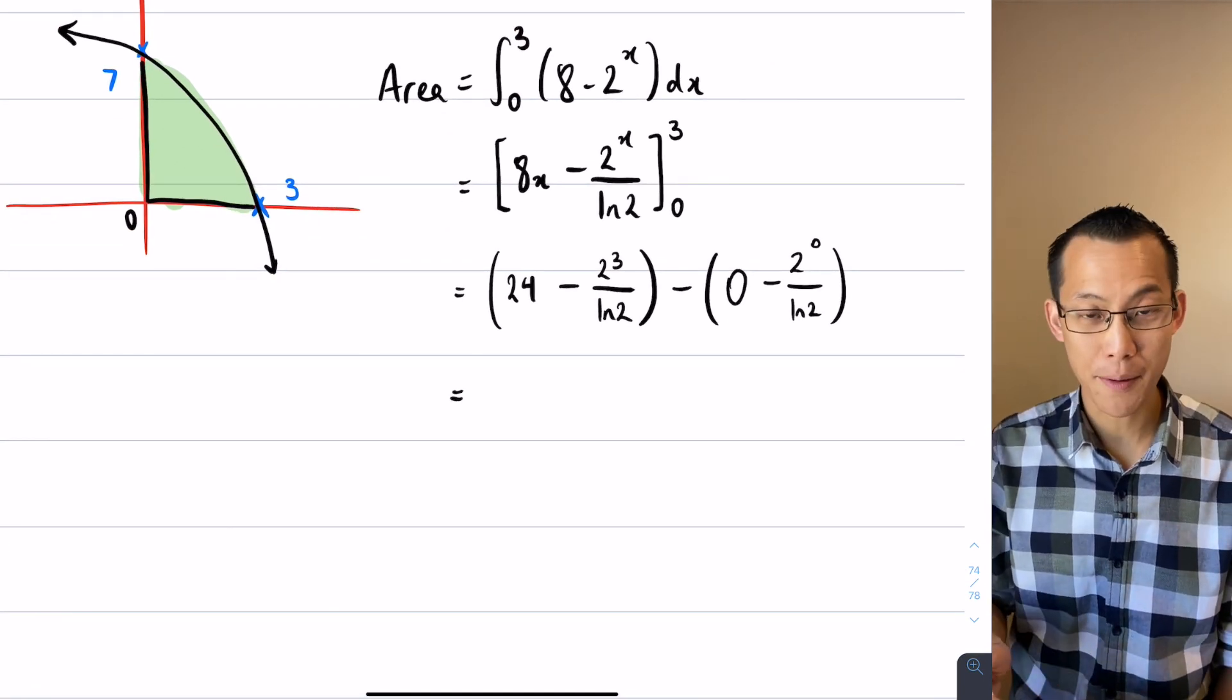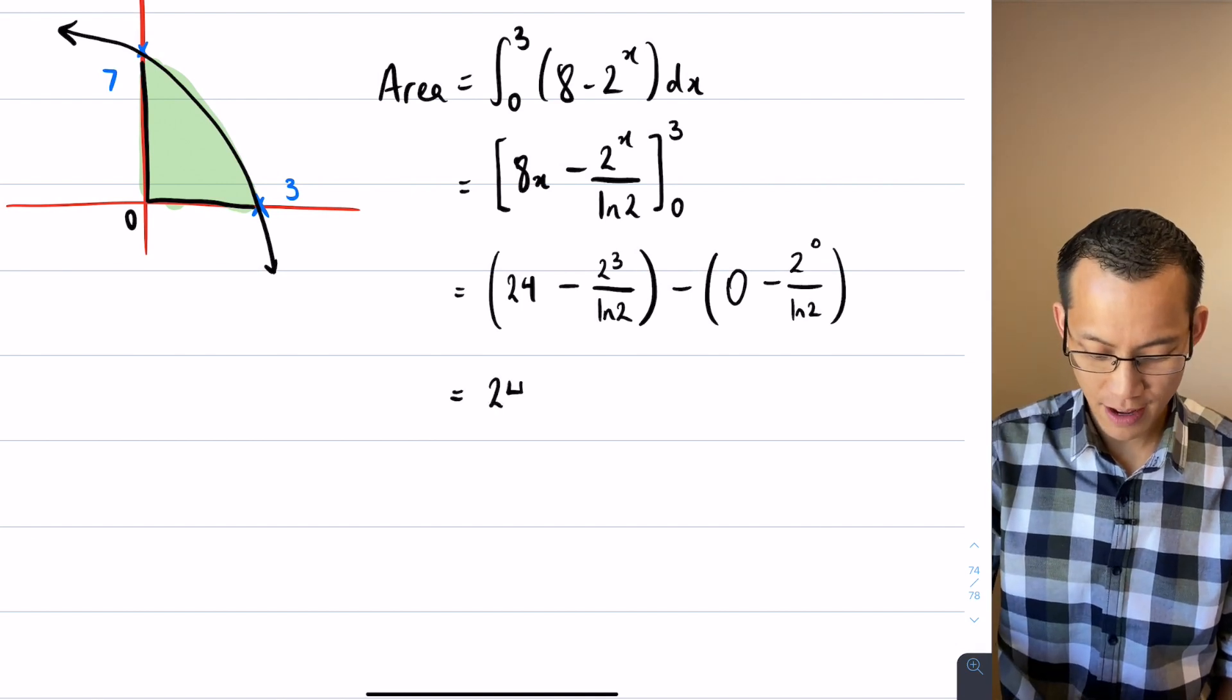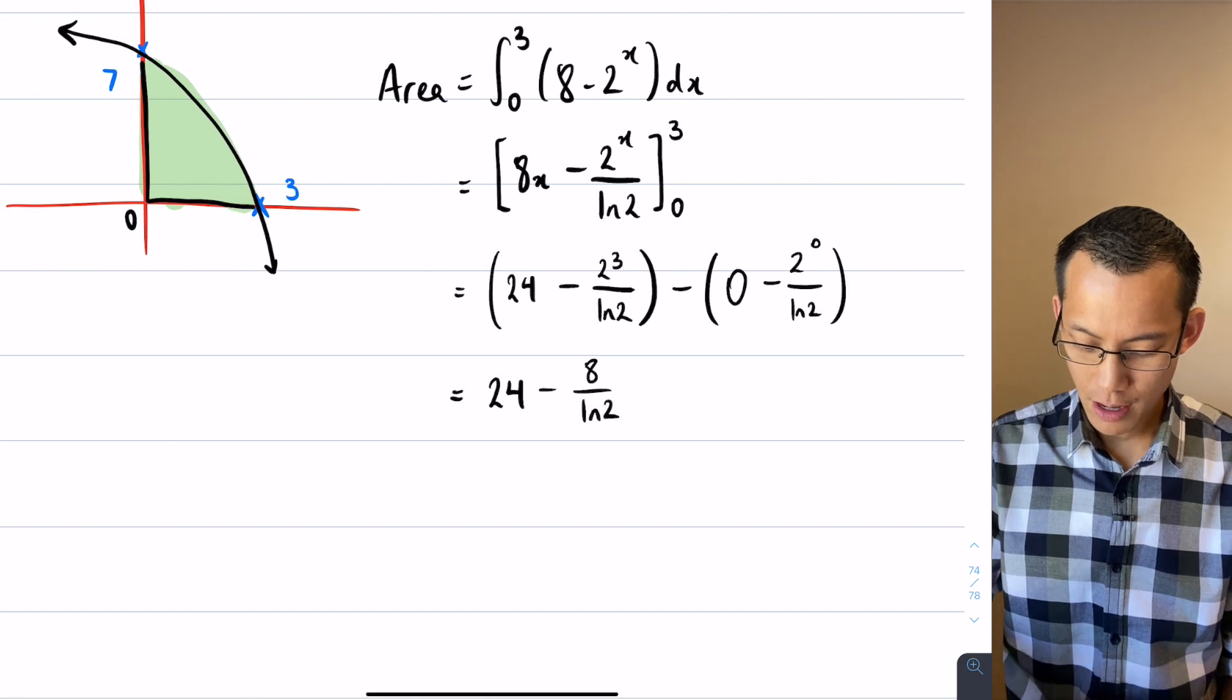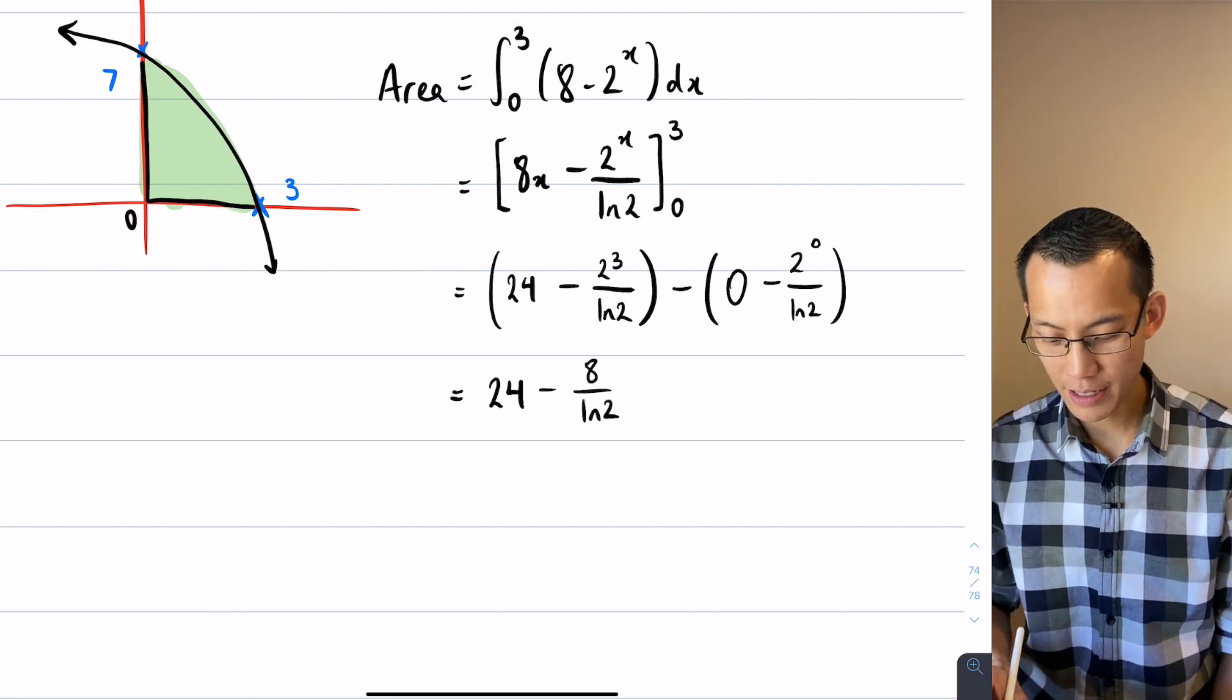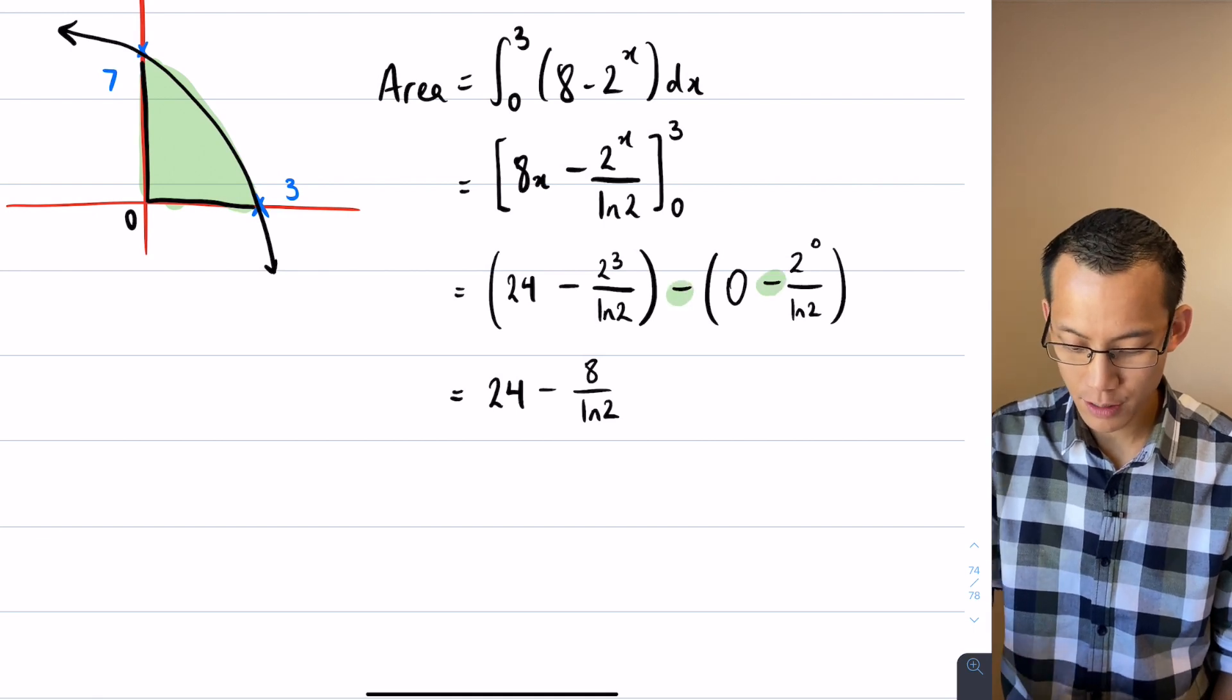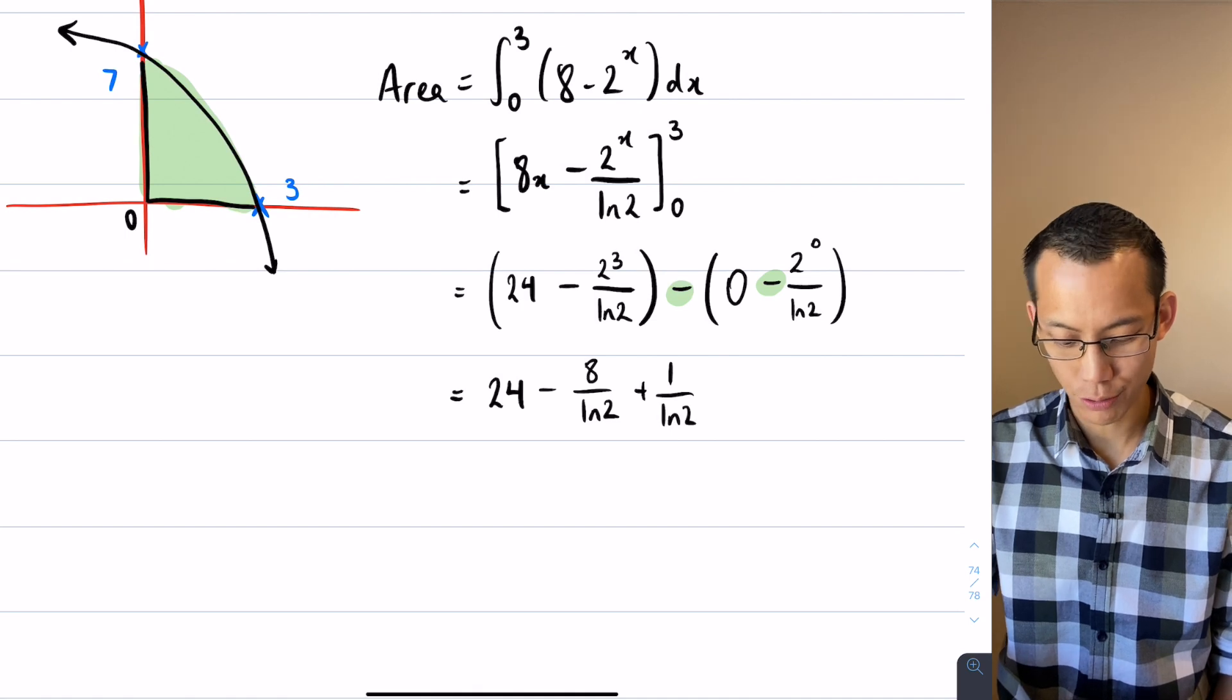Okay, let's start to simplify and watch out for your brackets and negatives and double negatives especially. So up the front there, 24 minus 8 on log 2. I'm subtracting 0 so that has no impact. Then I've got a, watch for it, a double negative in here. So therefore I'm getting plus 1 over log 2.